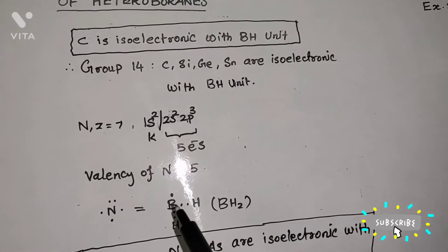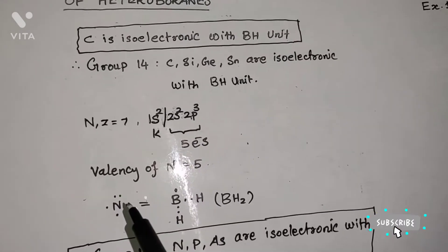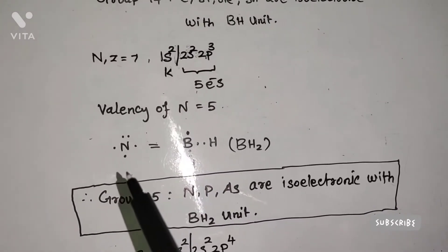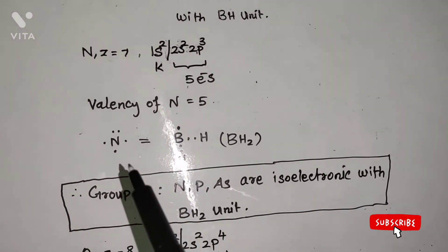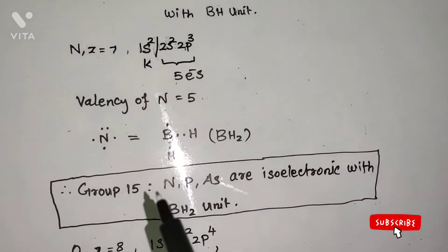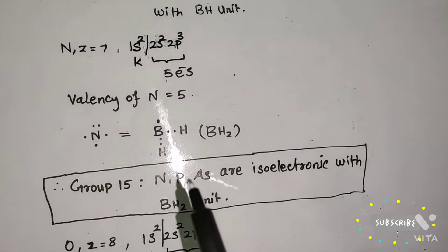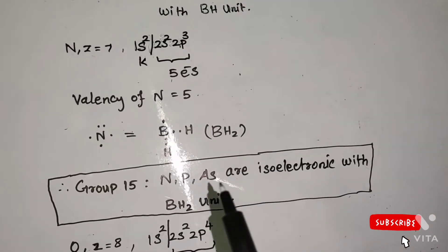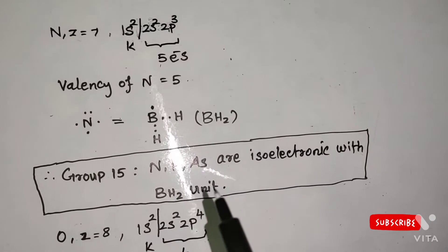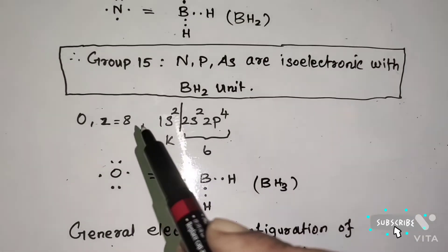The 5 electrons of BH2 are isoelectronic with the nitrogen atom. The general electronic configuration of group 15 elements is ns² np³. Therefore, group 15 elements — nitrogen, phosphorus, and arsenic — are isoelectronic with the BH2 unit.